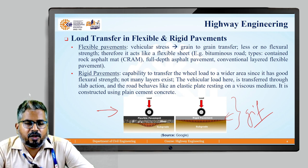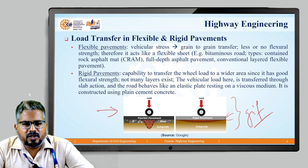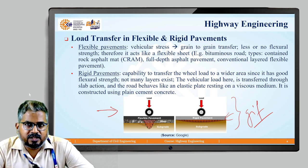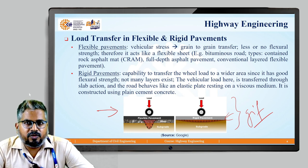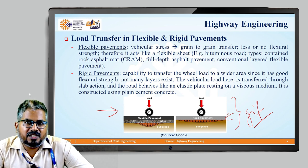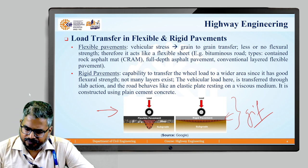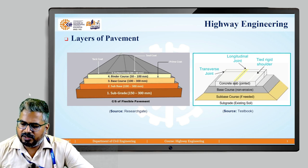Rigid pavements have the tendency to transfer wheel load to a wider area. Since they are good in flexural strength and do not require many layers, the vehicular load is transferred through slab action. The road behaves as an elastic plate resting on top of a viscous medium and is usually constructed using plain cement concrete.